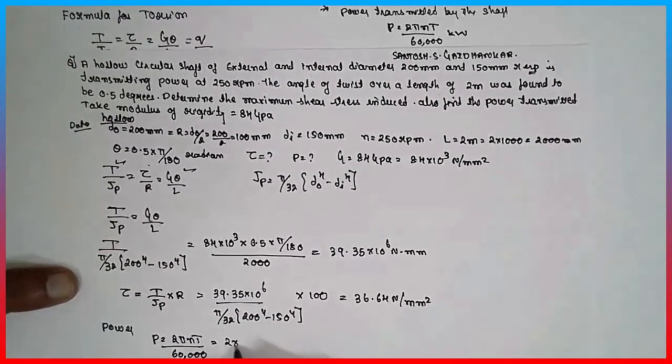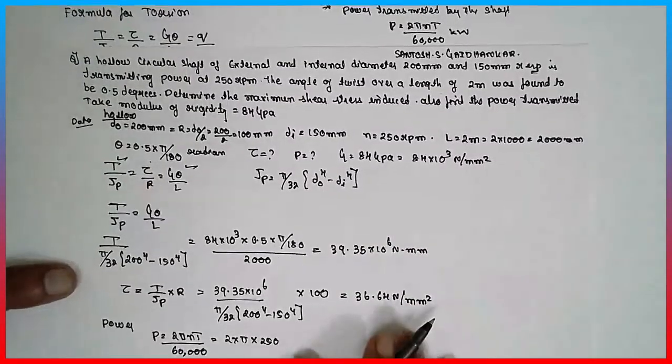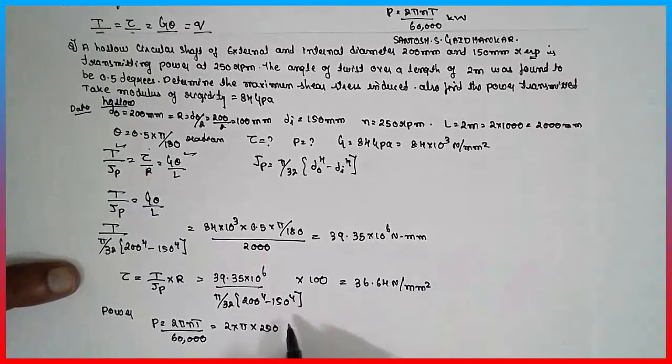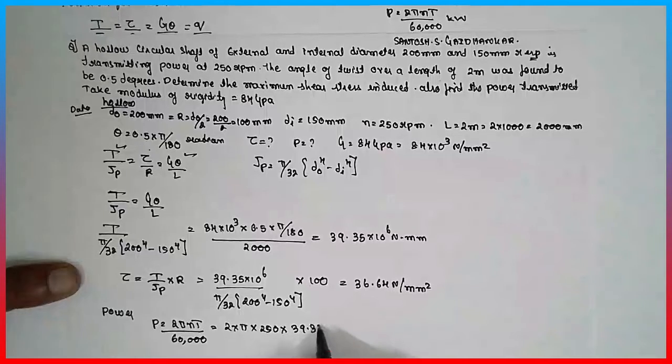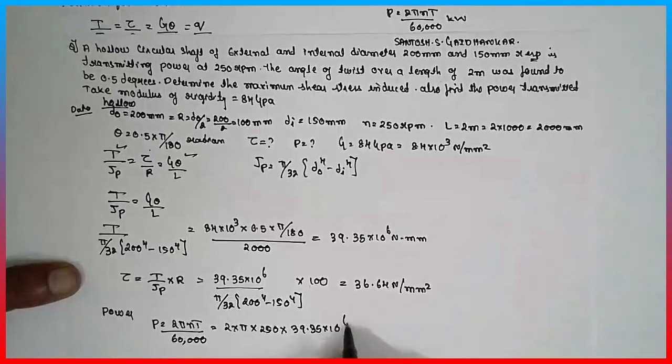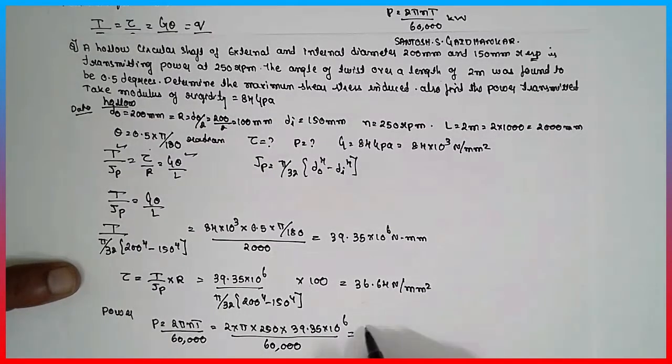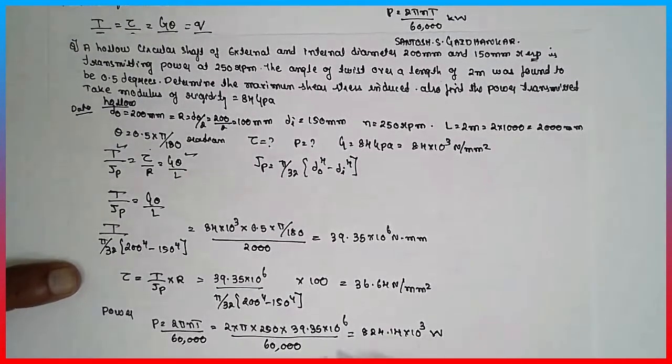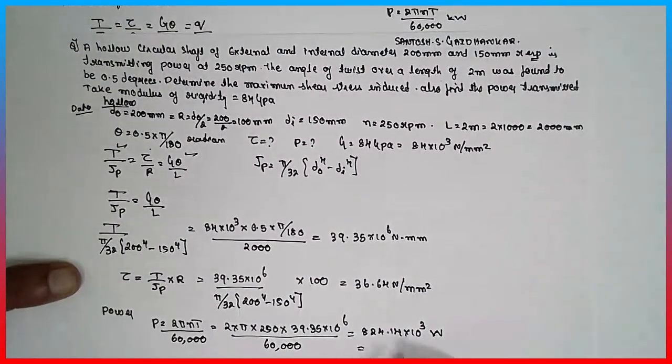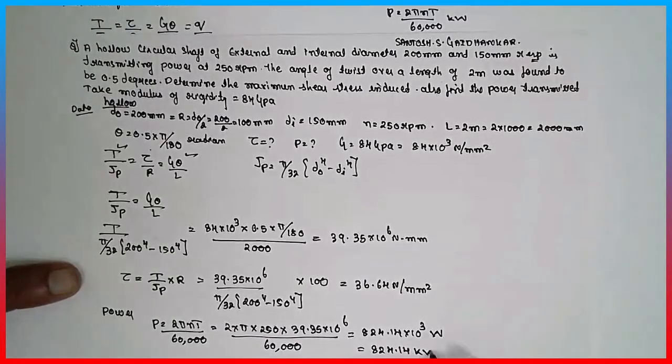2 into pi, n is 250, T is 39.35 into 10 raised to 6, divided by 60,000 gives 824.14 into 10 raised to 3 Watt. Further it will be 824.14 kilowatt.